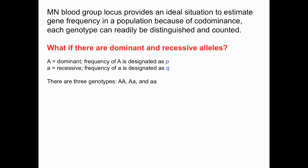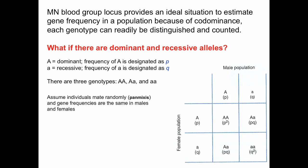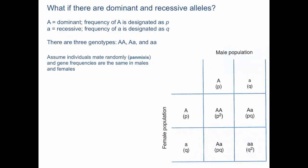There must be three genotypes: big A big A, big A little a, and little a little a. Assume individuals mate randomly — that's called panmixis — and that gene frequencies are the same in males and females. This is a hypothetical example for population genetics calculations. Humans don't necessarily mate randomly, but for the sake of argument, assume random mating with equal gene frequencies in both sexes.